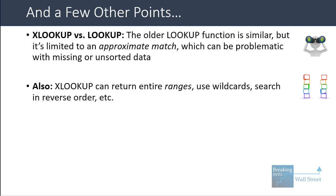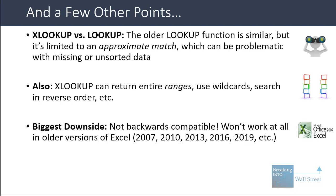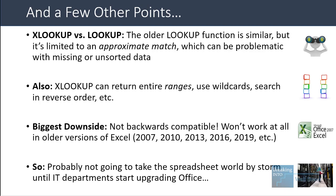XLOOKUP can also do a lot more than we showed here — it can return entire ranges, use wildcards, and search in reverse order depending on how your data is set up. The biggest downside is that it's not backwards compatible and won't work in older versions of Excel. So don't expect it to suddenly replace these older functions unless IT departments start upgrading everyone's Office installation very quickly.